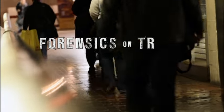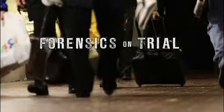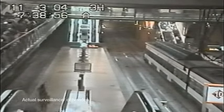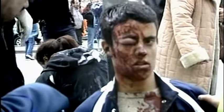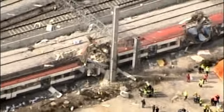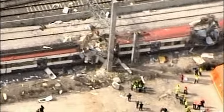March 11th, 2004. 7:30 a.m., rush hour. Ten bombs rip through Madrid's crowded commuter trains. 191 people are killed. More than 1,800 wounded. It is the worst terror attack in Spain's history, and bears the hallmarks of Al Qaeda.